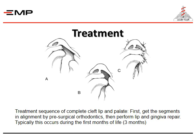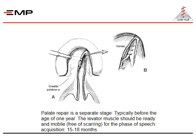The treatment sequence for complete cleft palate: first, get the segments in alignment by pre-surgical orthodontics, then perform lip and gingiva repair — typically during the first three months of life. Palate repair is done in a separate stage, typically before the age of one year. The levator muscle should be ready and mobile, free of scarring, for the phase of speech acquisition by age 15 to 18 months.